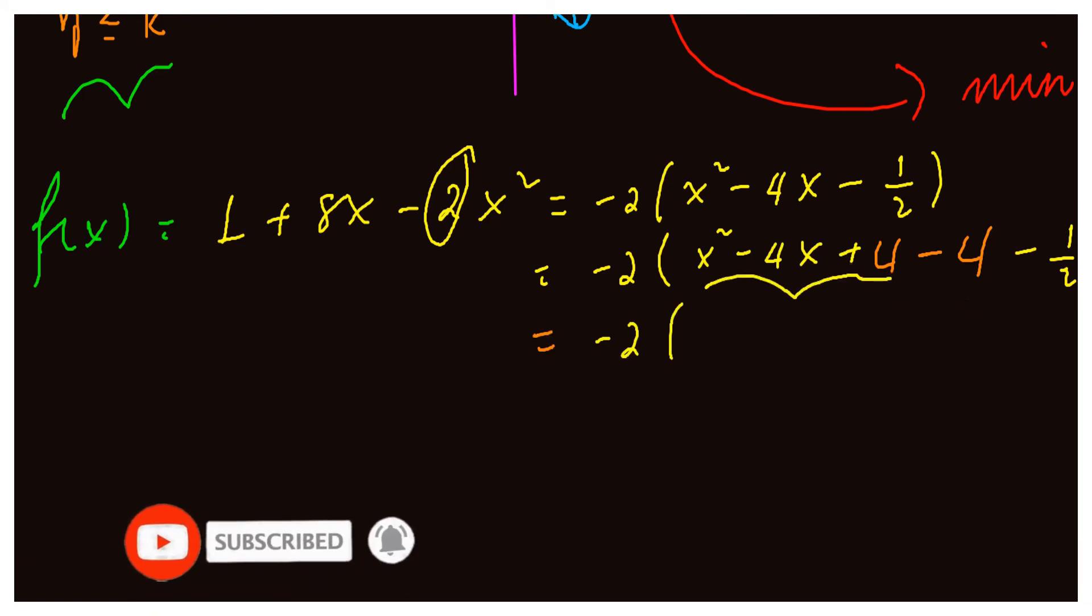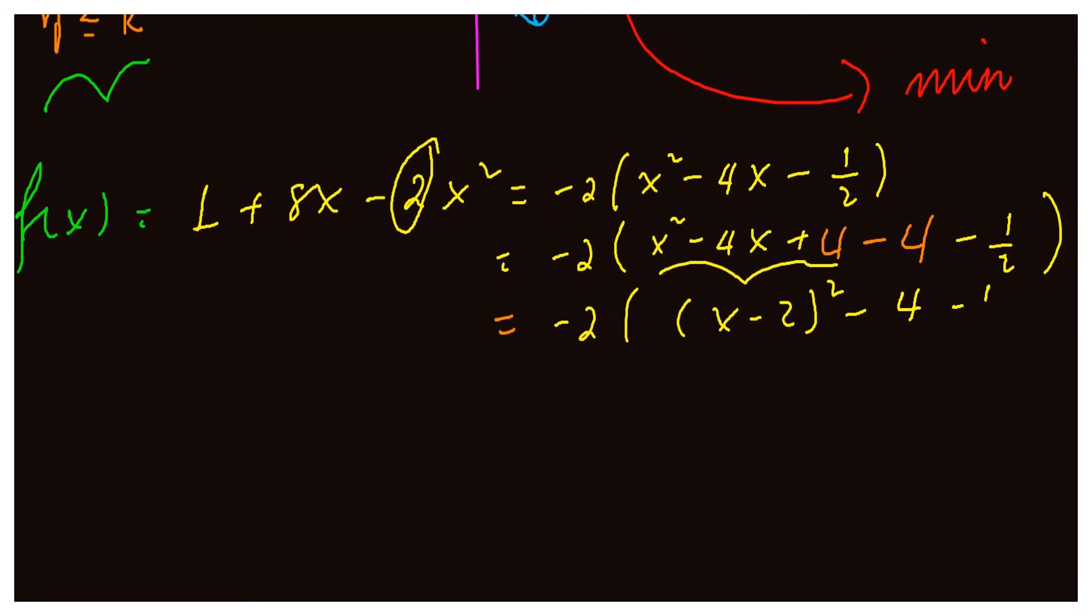So this is a perfect square, because it is the square of (x - 2)². Now, x² - 4x minus 1/2.